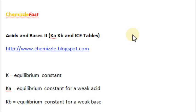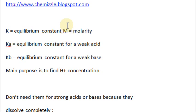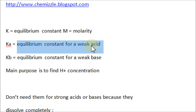If you haven't seen Part 1, you might want to watch that first. So, let's just get going — Part 2. First, K equals equilibrium constant. It's just a symbol we give to it, such as M equals molarity. We'll go over more of what that means — by later, I mean like 20 seconds. Ka is the equilibrium constant for a weak acid.